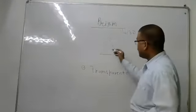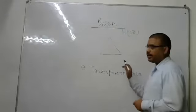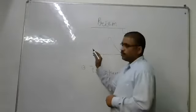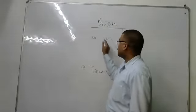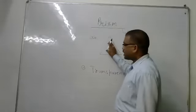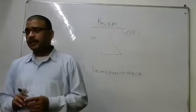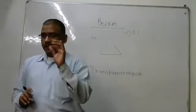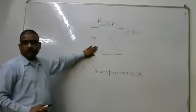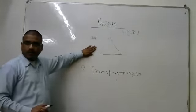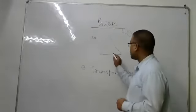What happened here? The first nature of light is that any kind of light, when it passes from one medium to another medium — here there is air present outside of this prism, which is one medium. And this is another medium, which we call glass. That glass is basically called a prism.